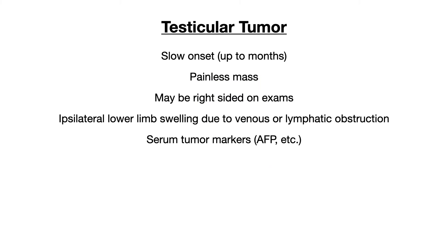Testicular tumors are different from the other pathologies because the onset tends to be a lot slower — obviously, for a tumor to develop, this happens over time. Whereas with epididymitis, testicular torsion, or hydrocele/varicocele, that's going to be much more acute. The testicular tumor tends to be a painless mass.